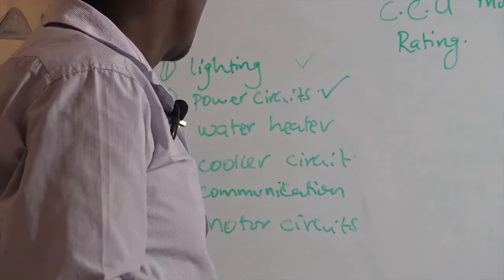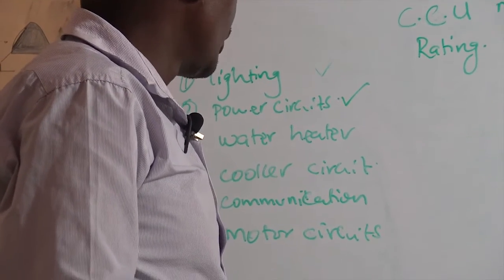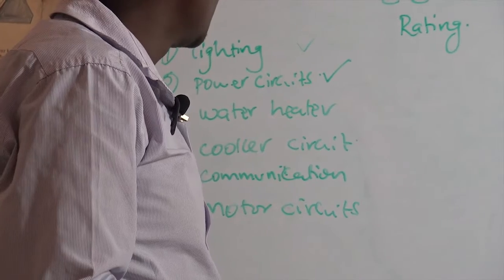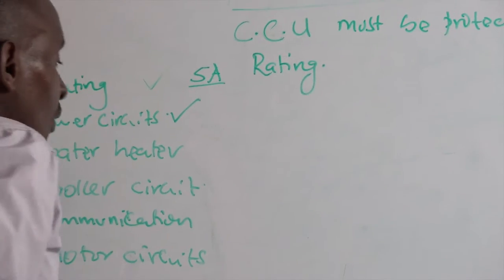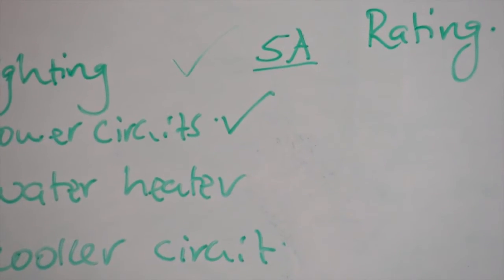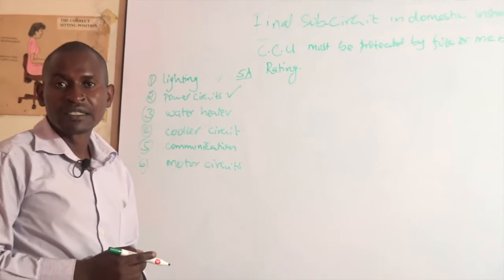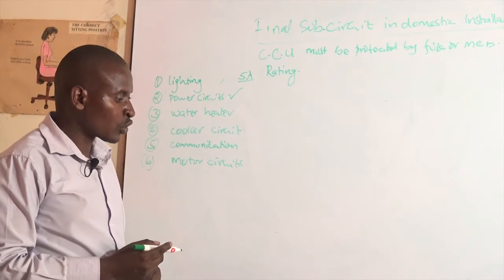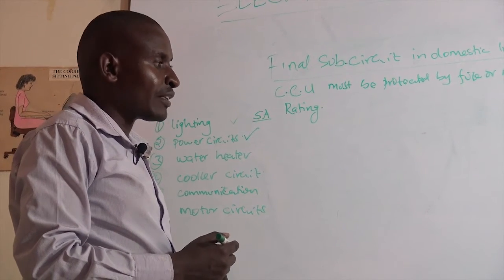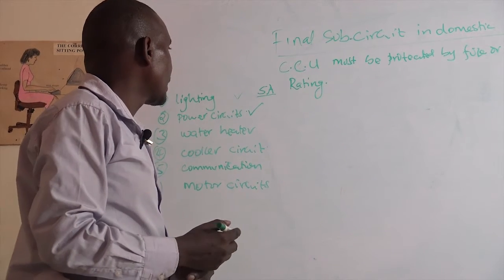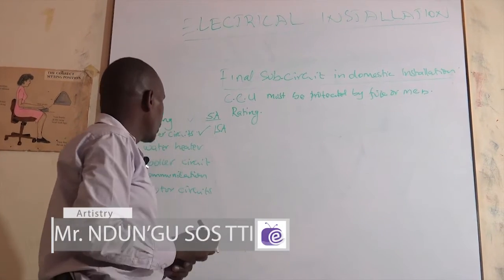All the final sub-circuits have different ratings. For a lighting circuit, the maximum rating allowed is 5 amperes. For a power circuit — this is where we connect portable appliances connected by a plug onto a socket outlet — the rating is 15 amperes and should not exceed 15 amperes.